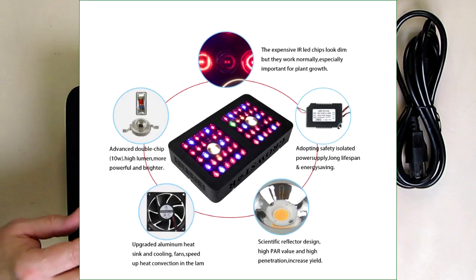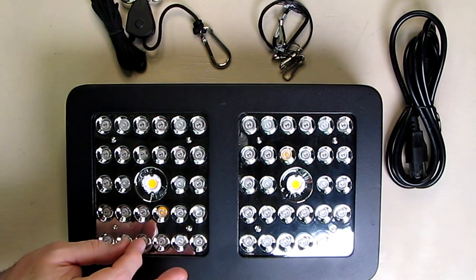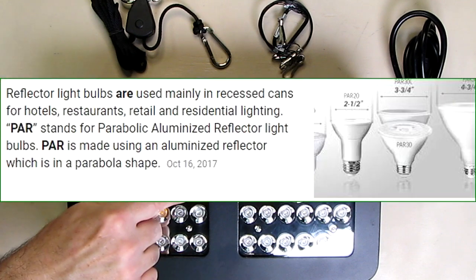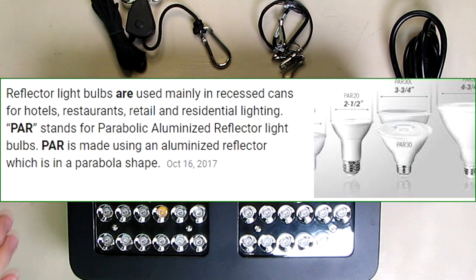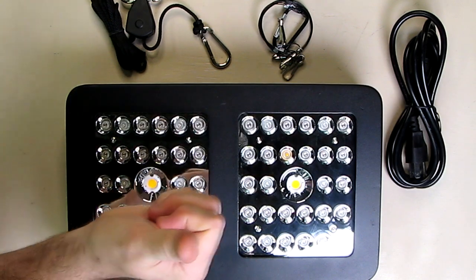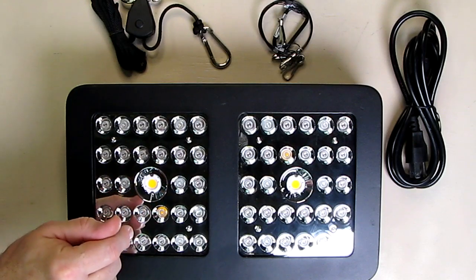These COB outputs have very high power output. PAR stands for parabolic aluminized reflector, and that's the aluminized reflector you see there. That concentrates the output so the bulk of the light is coming outward and not going into the die or the device itself.